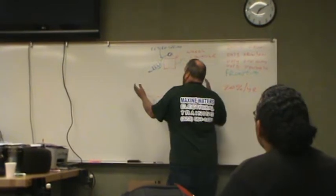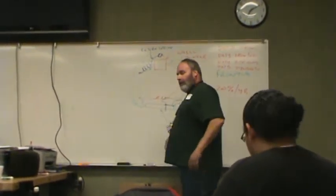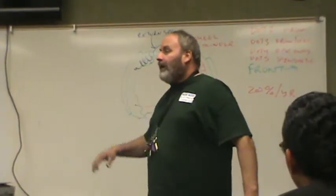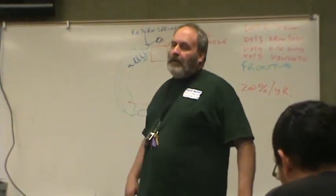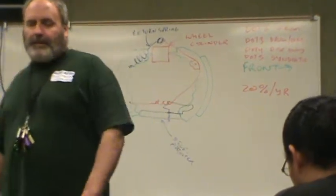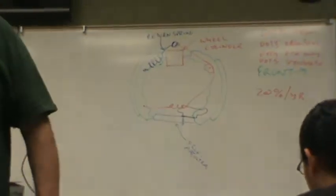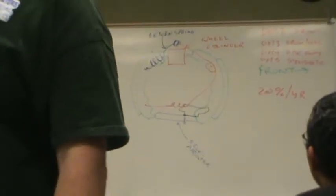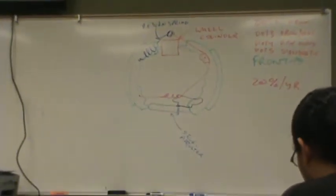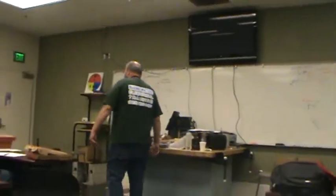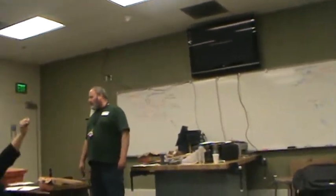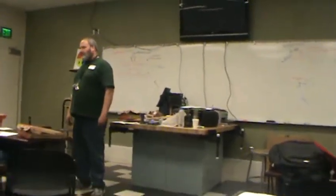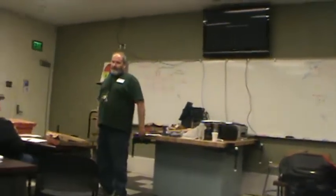The point of the return springs is to pull the shoes off the drums, which is why if I have a car with drum brakes and I spin the tire, it should spin free. What's the only thing that's going to restrict the rotation? What's the only thing that's going to determine the resistance of the tire to spinning on a drum brake system? No, the return springs have pulled the shoes off of the drum.